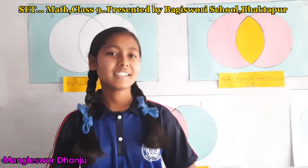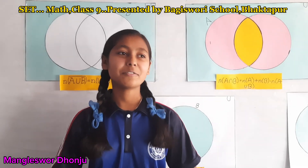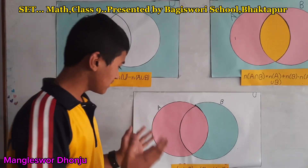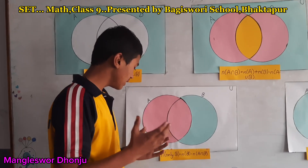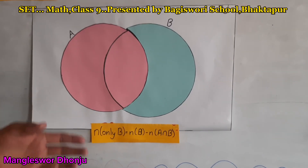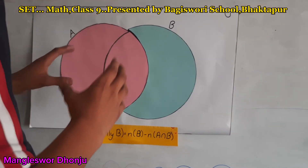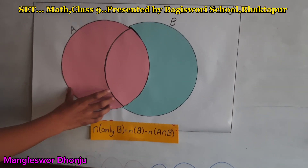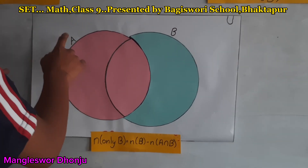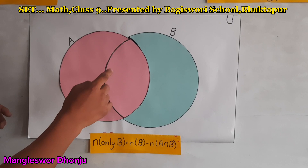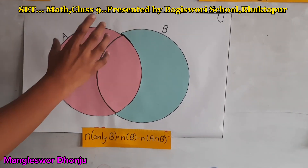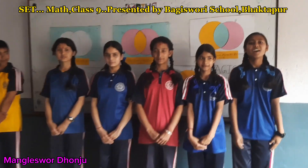This is the last one and we are going to call our friend Kapil for the description of formula N only B. I am explaining the formula: N only B equals N(B) minus N(A intersection B). This is the whole part of A and this is the whole part of B. When we subtract A intersection B from the number of B, the remaining part is N only B. Thank you.